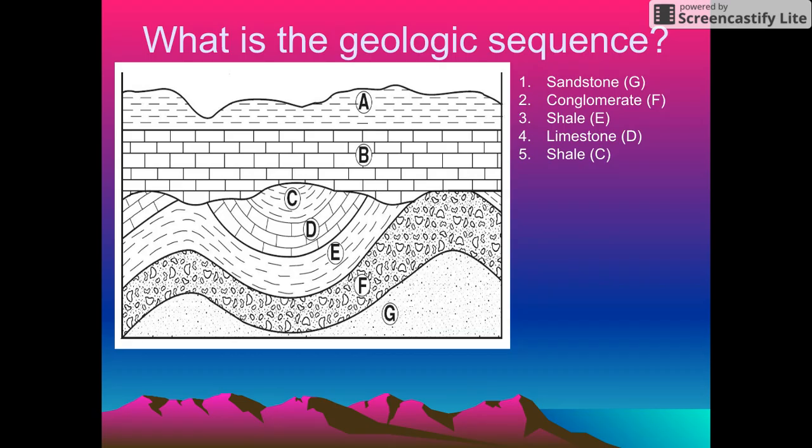So our symbol shows us that we have sandstone, conglomerate, shale, limestone, and then some more shale. And all of these are sedimentary rocks.